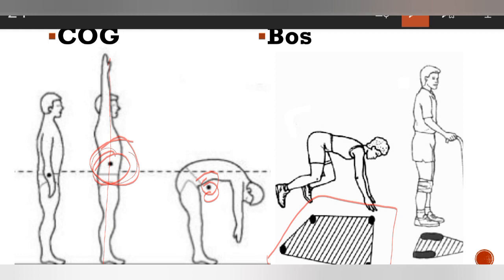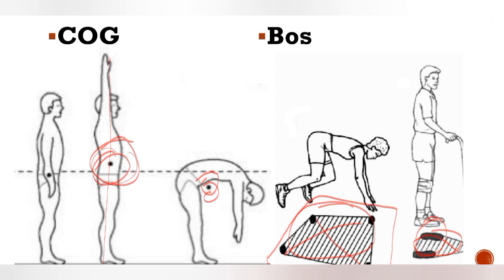In a quadrupedal position, there is a wider base of support. When standing on two legs only, the base of support is narrower. So that is how we see the relationship between base of support and stability.